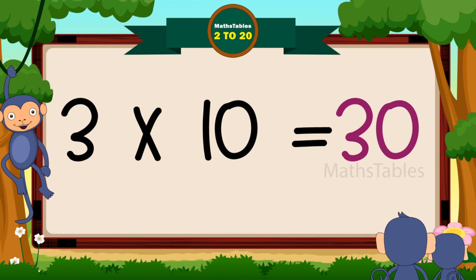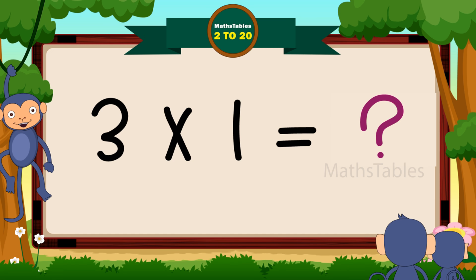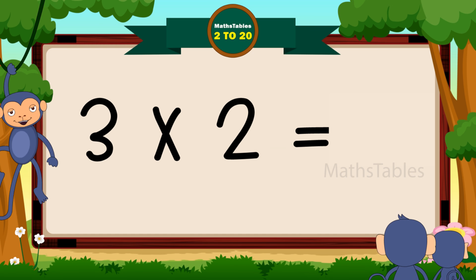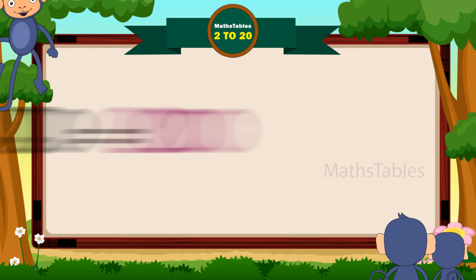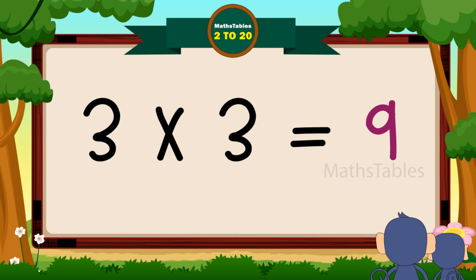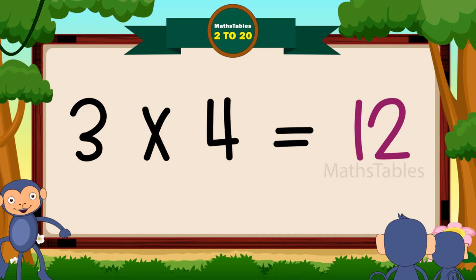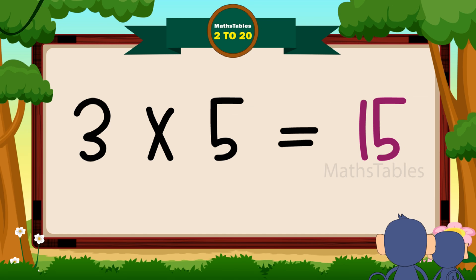Three tens are thirty. Three tens are thirty. Three ones are three. Three twos are six. Three threes are nine. Three fours are twelve. Three fives are fifteen.